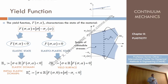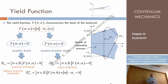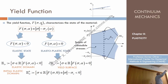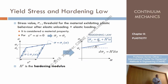Now let's define something else — this part is more devised for generalization to 3D cases than for specific 1D cases. We define a scalar function F of sigma and alpha. For uniaxial cases, this yield function is defined as the modulus of sigma minus the yield stress, which depends on alpha. We postulate that whenever this function returns a negative number, the material is incrementally elastic.